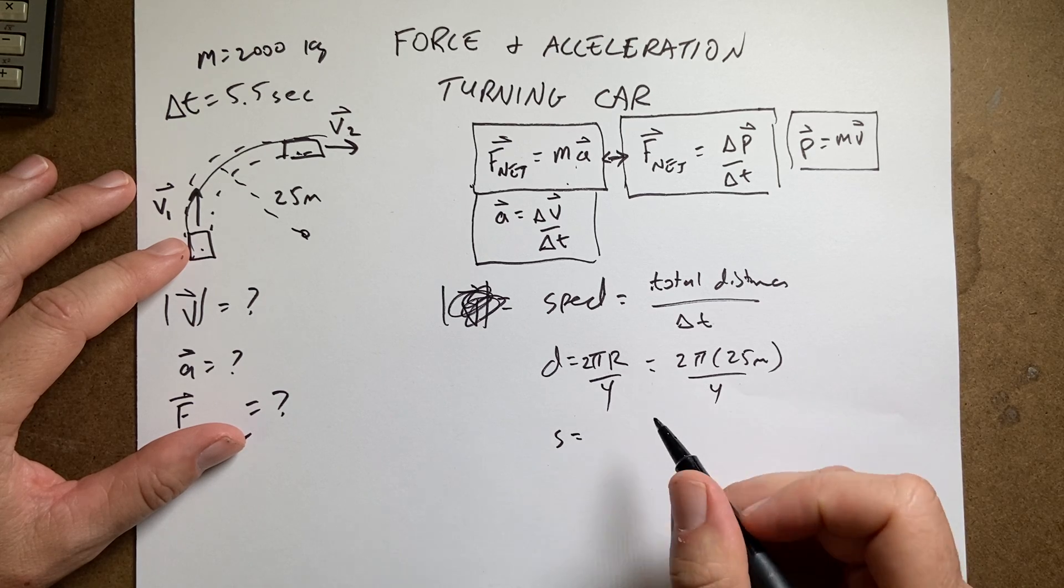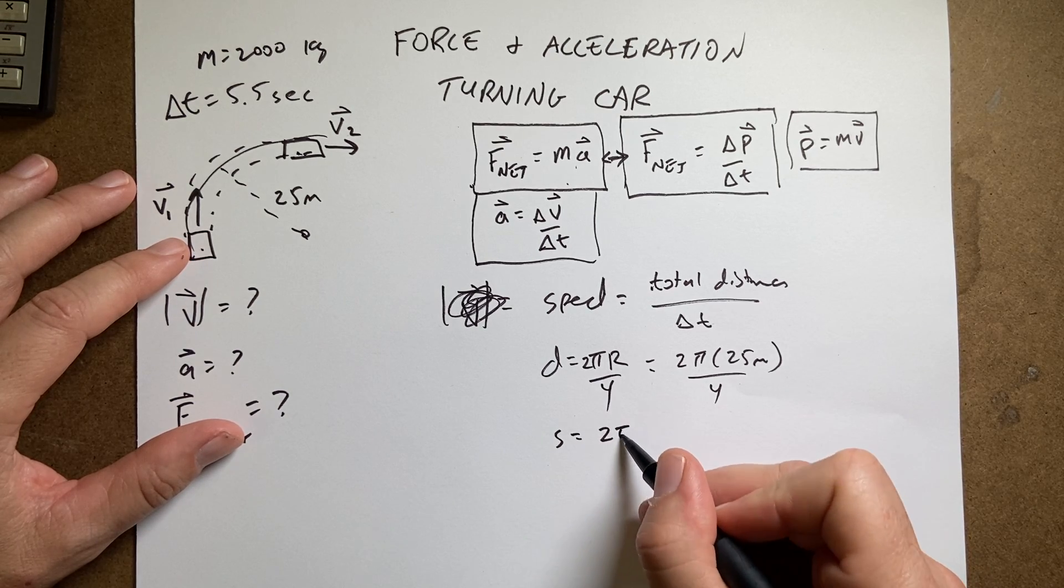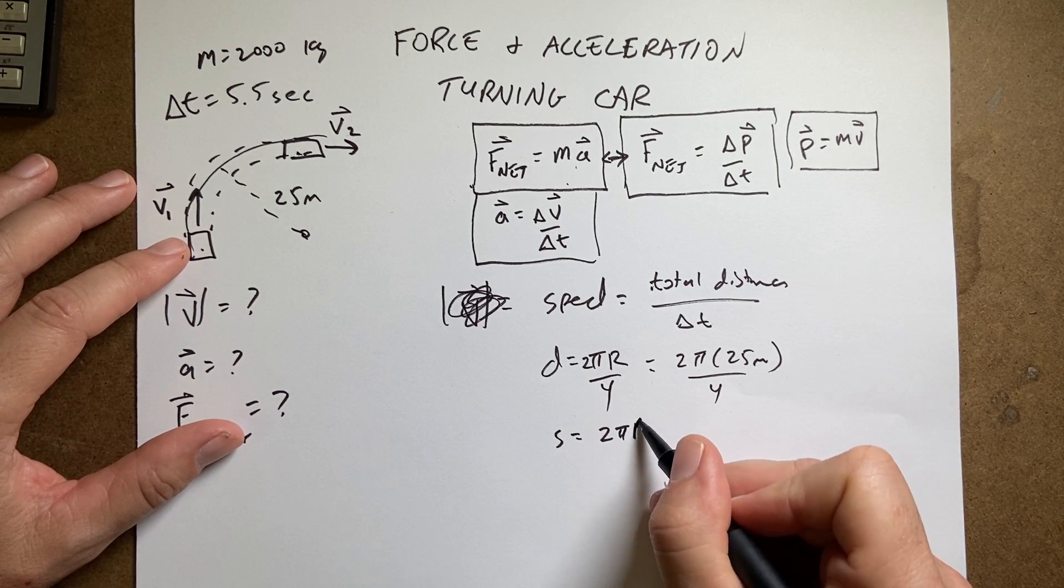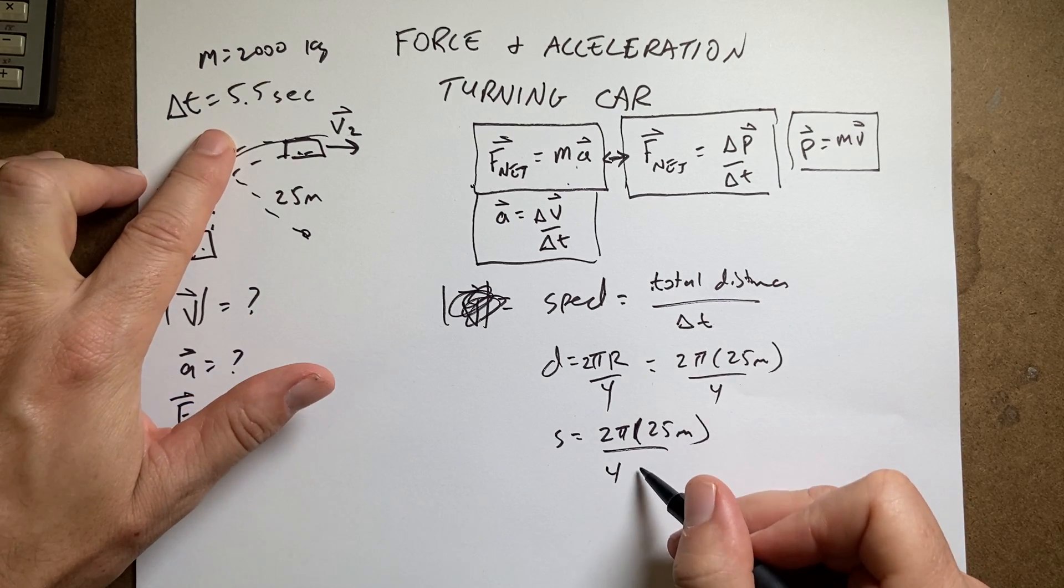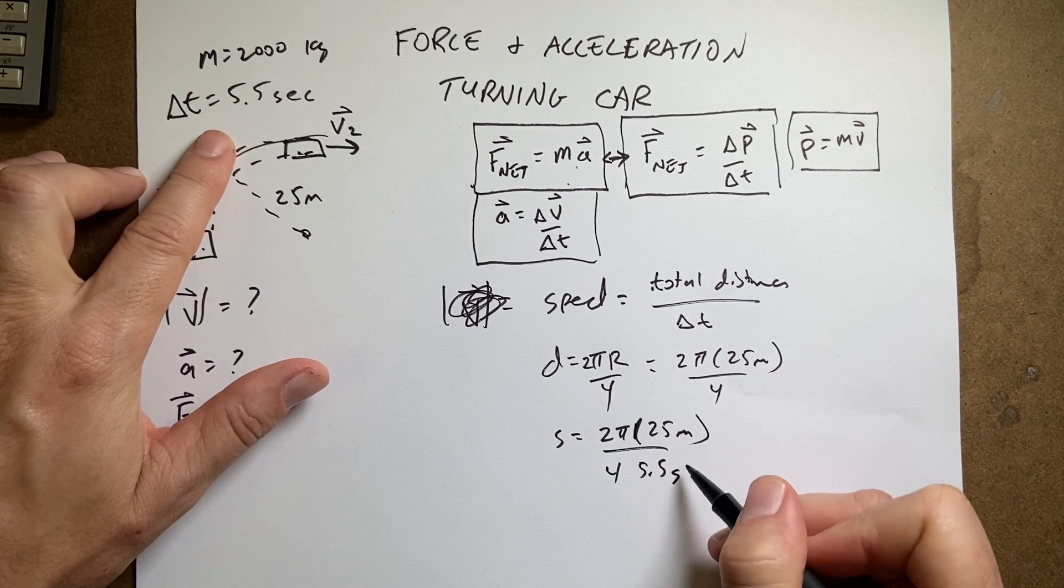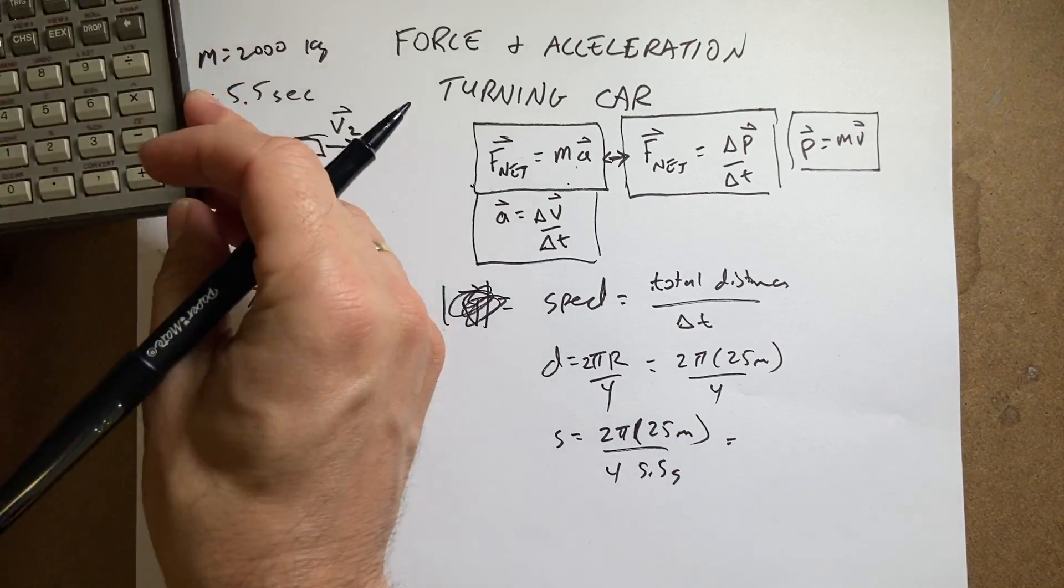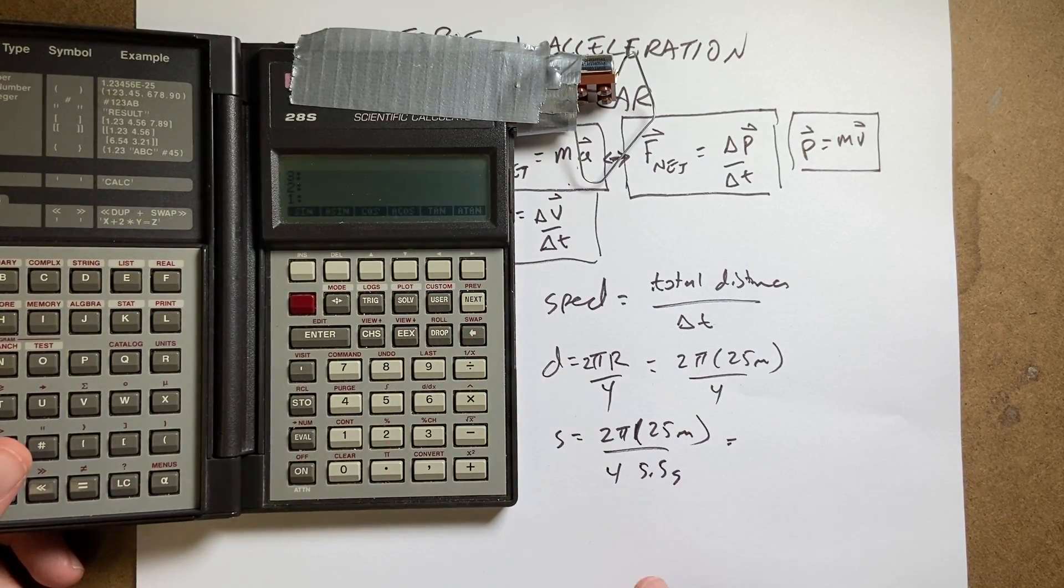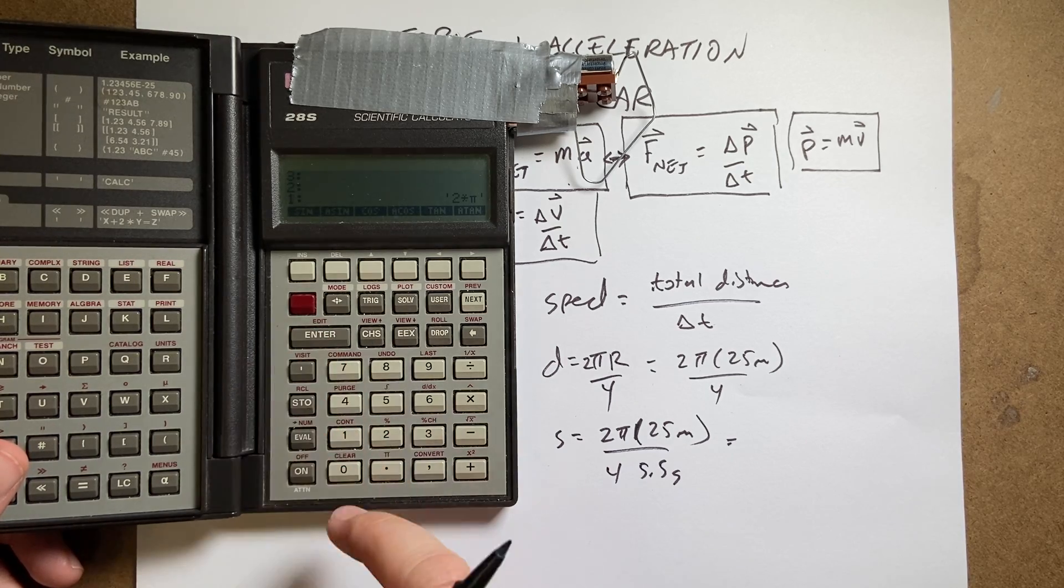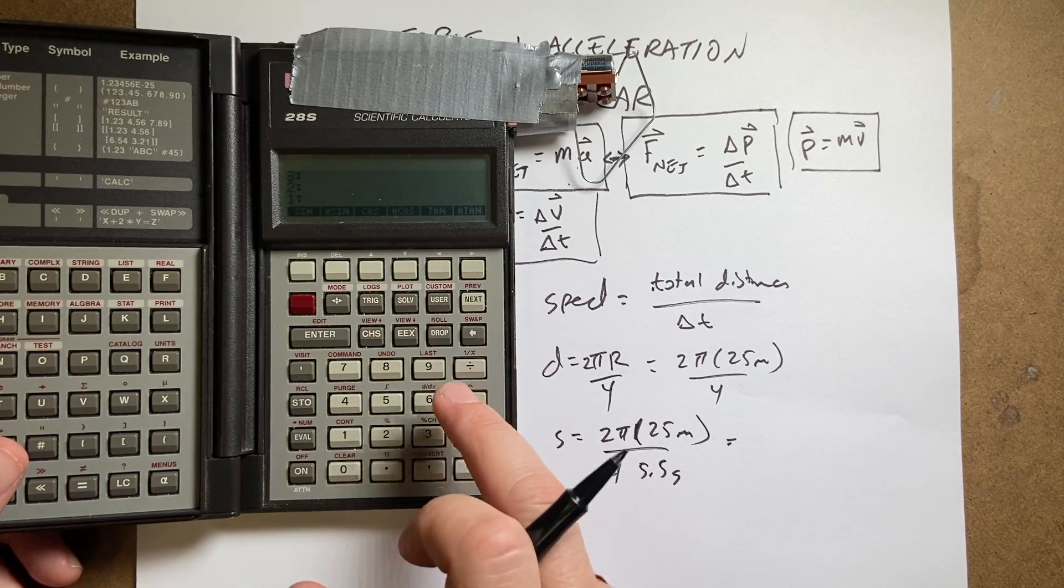And so the speed is going to be equal to, I'll call it s, the total distance which is 2 pi times 25 meters over 4 divided by the time of 5.5 seconds. And I'm going to use my little calculator right here and I get, drop, so I'm going to say 2 enter pi times evaluate, let's see wait, okay drop that, I don't remember.